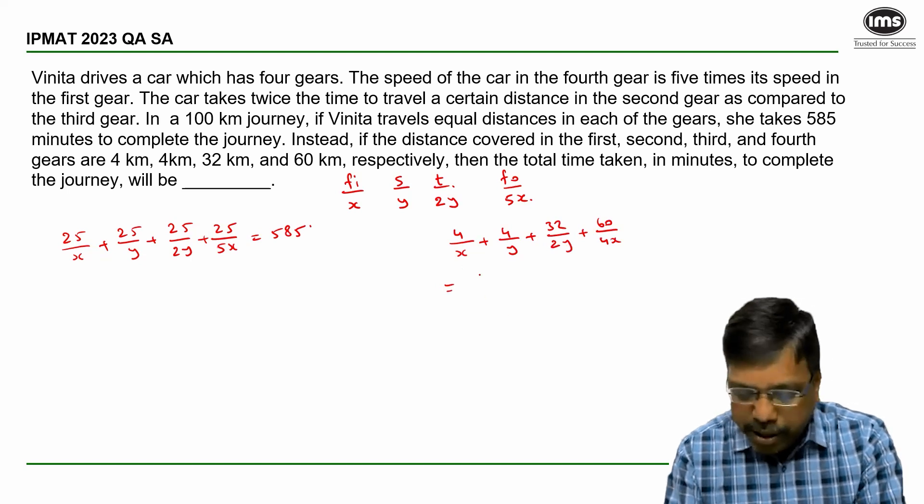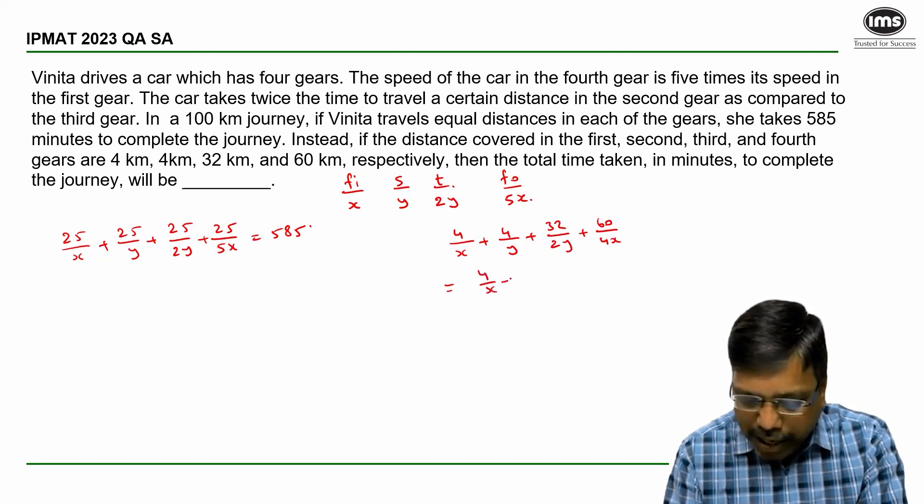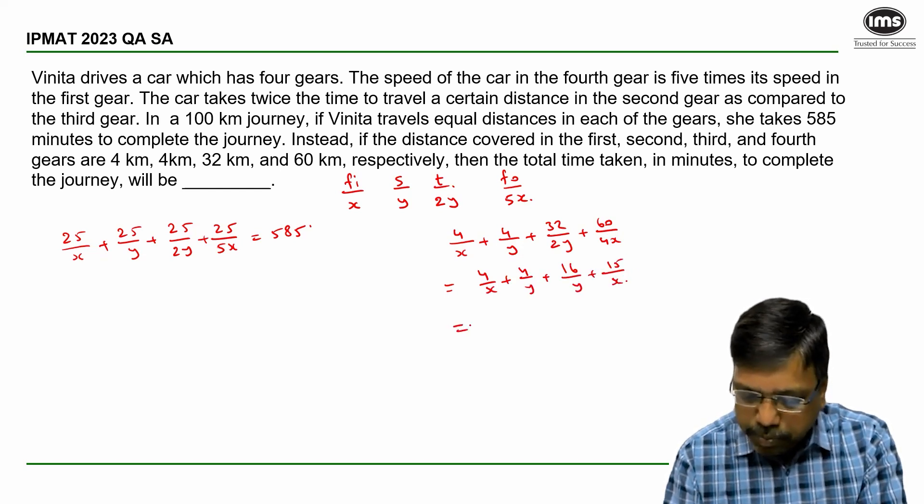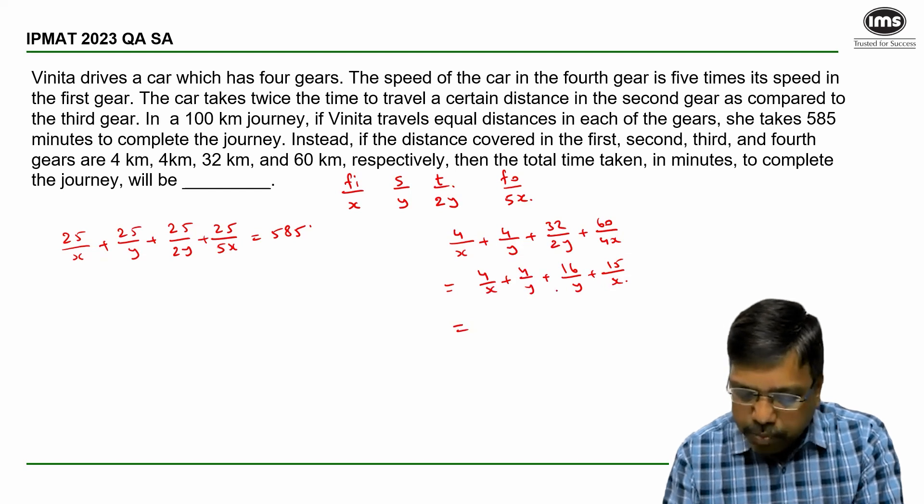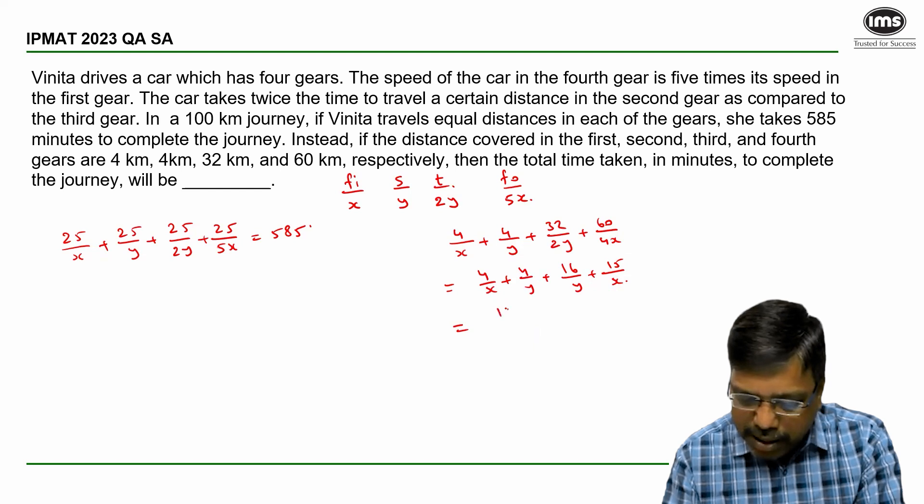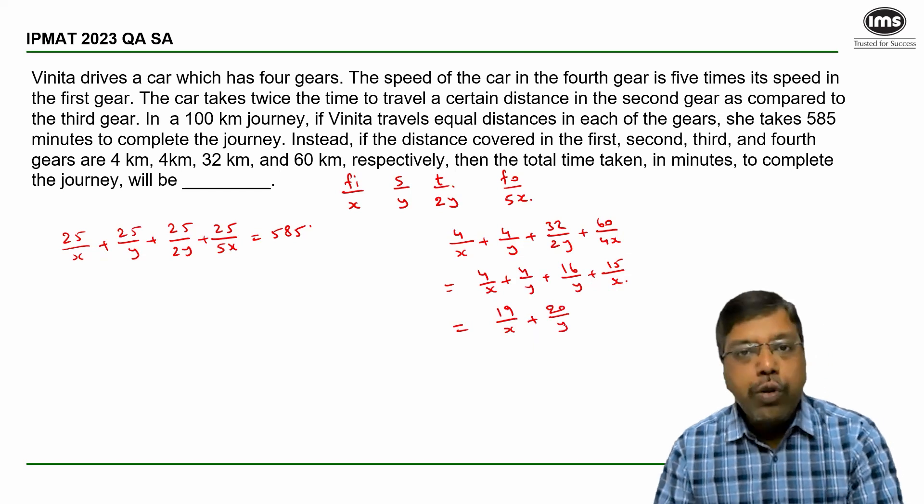So if I simplify it a bit here, I get 4 by x plus 4 by y plus 16 by y plus 15 by x. So which gives me 4 by x plus 15 by x is 19 by x plus 20 by y. So this is what we need to find out.